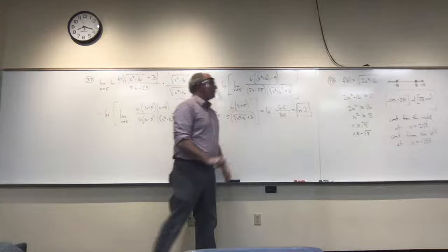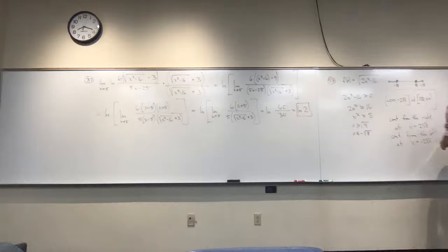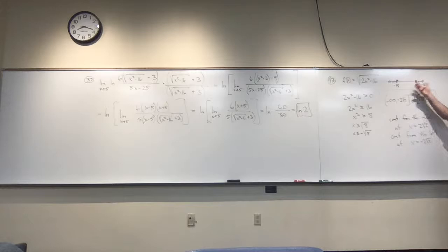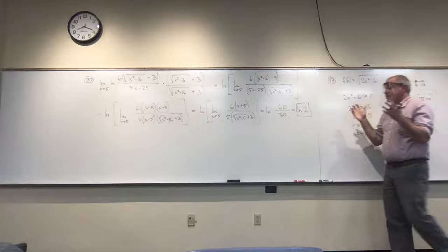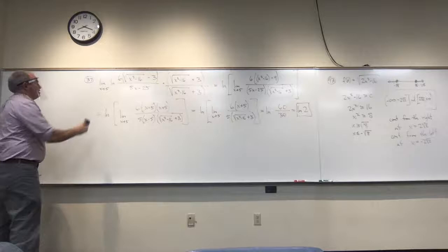So this is continuous from the right at x = 2√2, and continuous from the left at x = −2√2. For these types of problems, figure out where the function actually exists — all other places it's non-continuous — and then identify where it's only continuous on one side.